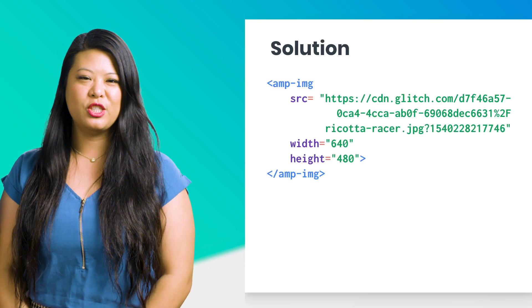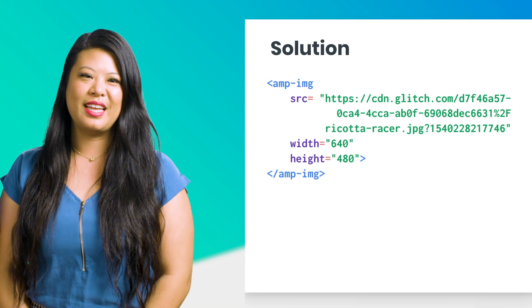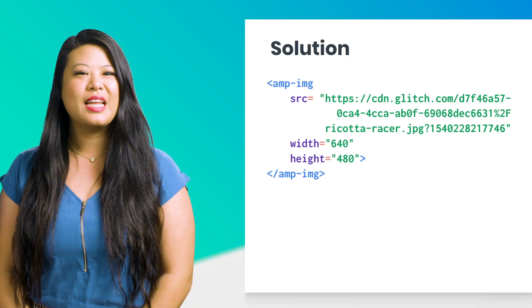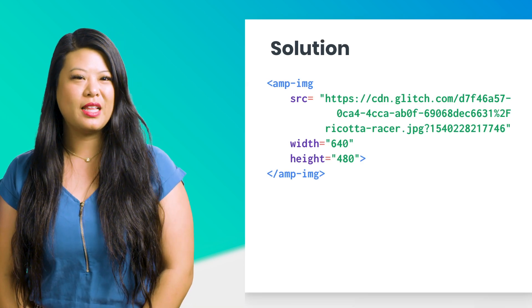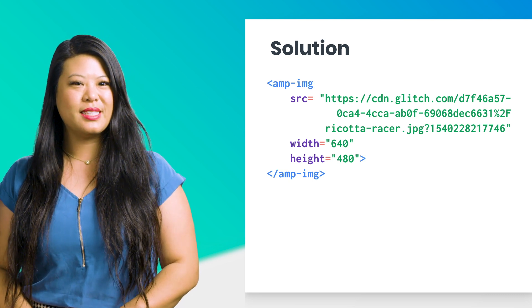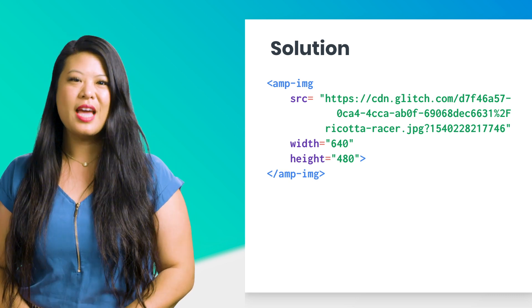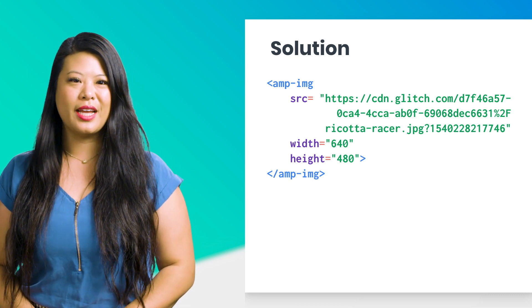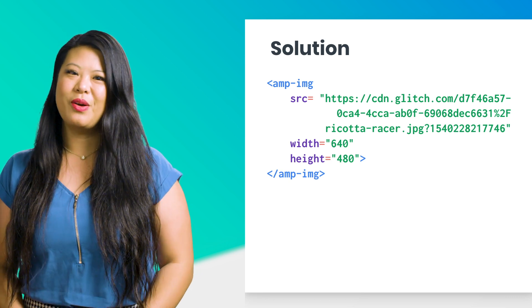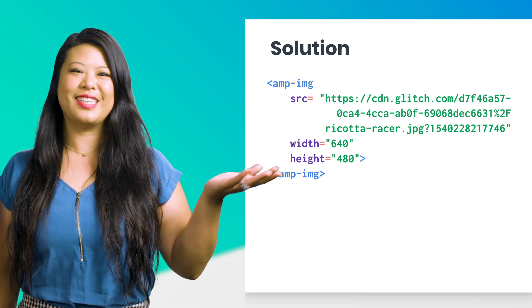The portion of the page containing the image should look like the HTML on your screen. Now check the AMP Validator extension. If you've completed this exercise successfully, the extension icon will be green. And if so, congratulations — your page is now a valid AMP page!